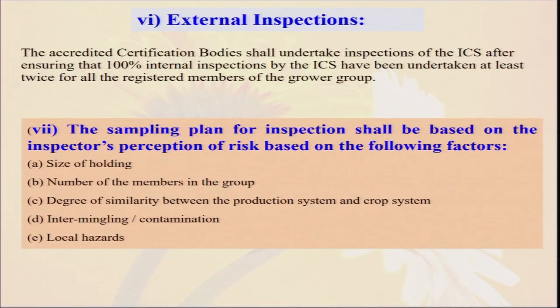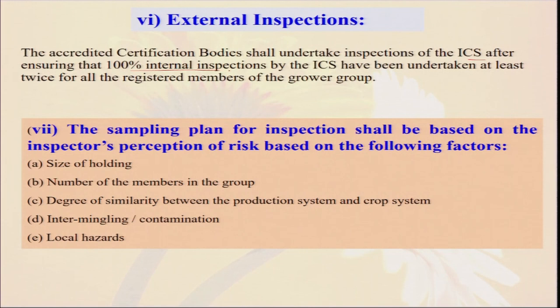Beyond internal inspection, there is also need for external inspection by the nationally approved body — organizations given the job by APEDA will send their inspector to visit even in the case of group cultivation of organic farming. The accredited certification body ensures that 100 percent internal inspection is done first, and then external inspection occurs. The sampling plan depends on size of holding, number of members, degree of similarity of crop systems, contamination risk, and local hazards. These factors decide how many samples should be taken for residue analysis — for example, if the group is growing more than 20 different crops, sampling will be more extensive.